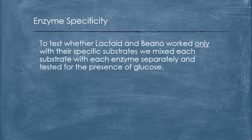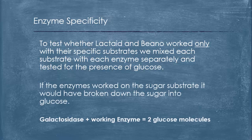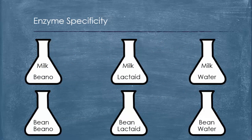To test whether or not lactase and beano work together only with the specific substrates, we mixed each substrate with each enzyme separately and tested for the presence of glucose. If the enzyme worked on the sugar substrate, it would have broken down the sugar into glucose. What was happening essentially was the alpha and beta galactosidases, if they were put together with a working enzyme, would be broken down into two glucose molecules.